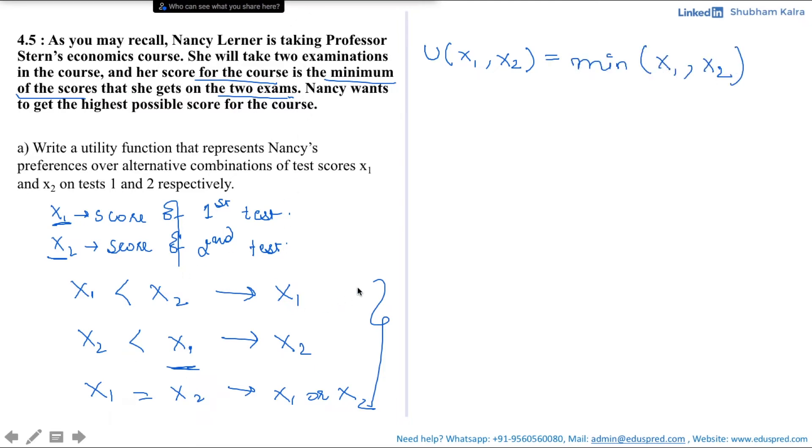Now, let's verify if this function is correct or not. Suppose Nancy scores 50 on X1 and 52 on X2. Since X1 is less than X2, then the score of X1 should be considered, that is the score of 50 should be considered. Let's substitute the values of X1 and X2 into this function and see if that happens as well. So that would be U(X1, X2) equals minimum of X1 which is 50 and X2 which is 52. The minimum of 50 and 52 is 50. So the answer would be 50. Hence, it matches with this condition.